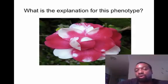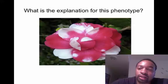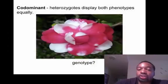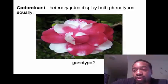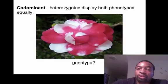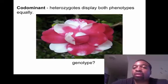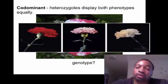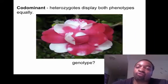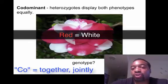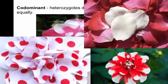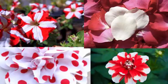Now this brings us to another mode of inheritance. Notice that this flower has red and white splotches. What's the explanation for this phenotype? This is called codominance, instead of incomplete dominance or normal dominance. In codominance, the heterozygotes display both phenotypes equally. In the first example, the heterozygotes had an allele for red and white but displayed an intermediate phenotype — pink. In this case, red and white are equally dominant, so you'll see red and white splotches, polka dots, petals, or stripes. The heterozygote will have red and white represented, not the intermediate.